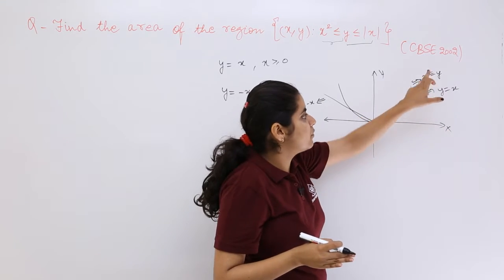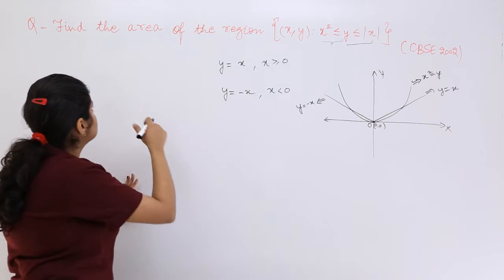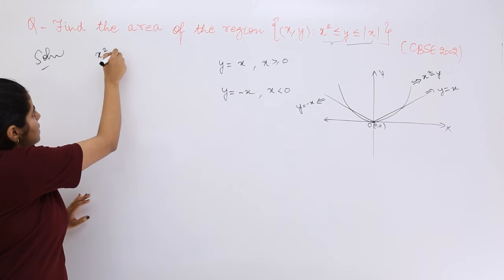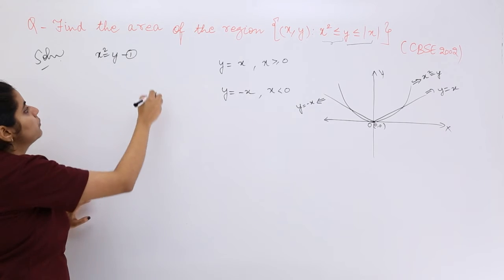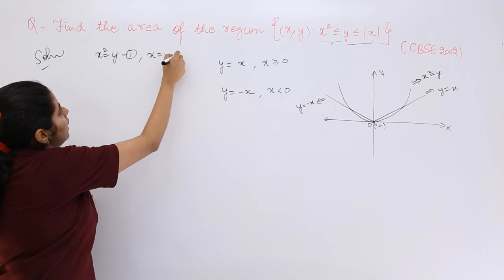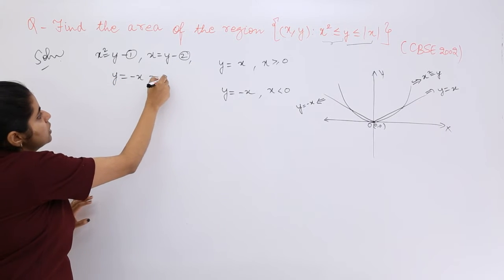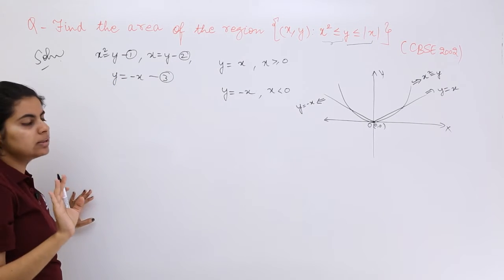So if x = y, if I put it here, let me name these as equations by writing solution. I have first: x² = y, this is equation number 1. I have x = y which is equation number 2. I have y = -x which is equation number 3. Nothing more than this.